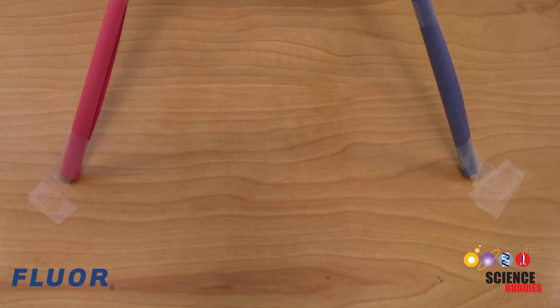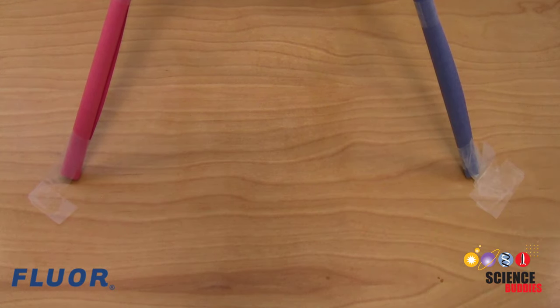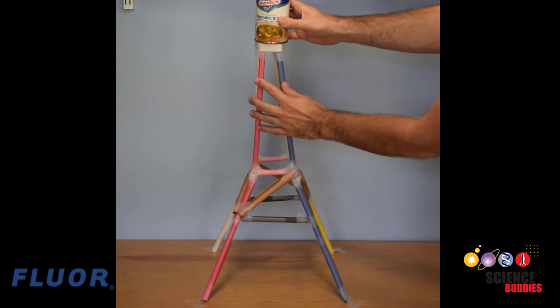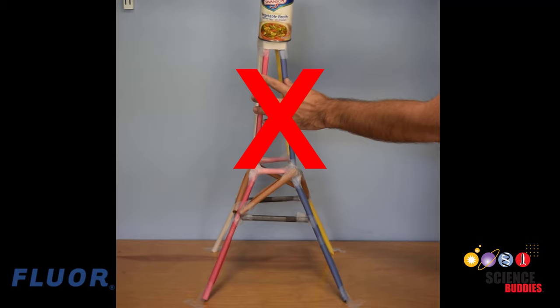Your tower can be taped to the supporting surface like the floor, table, or countertop, but otherwise it must be freestanding. For example, a person cannot hold onto the tower to support it after placing the can, and you cannot tape it to the wall or a chair for support.